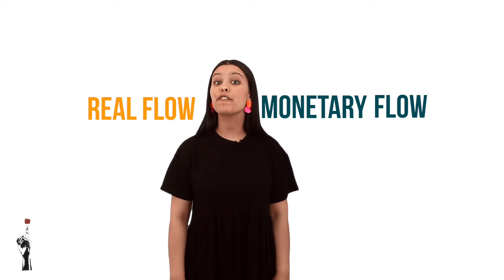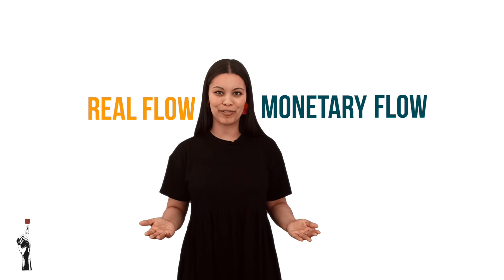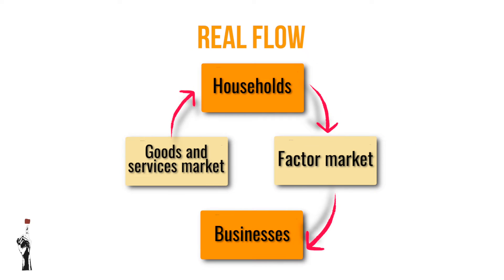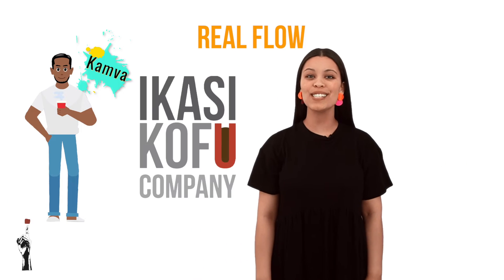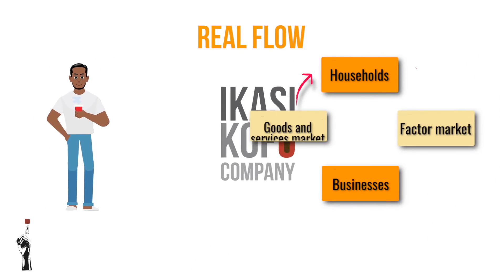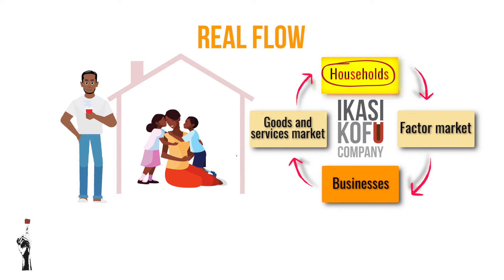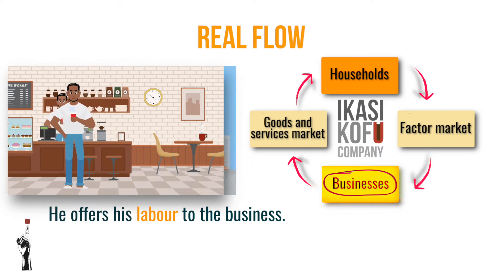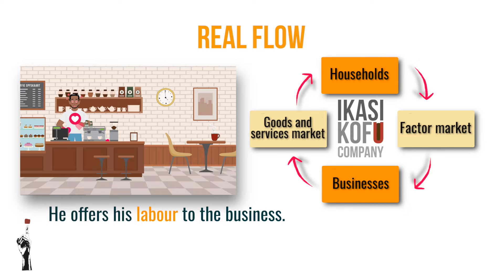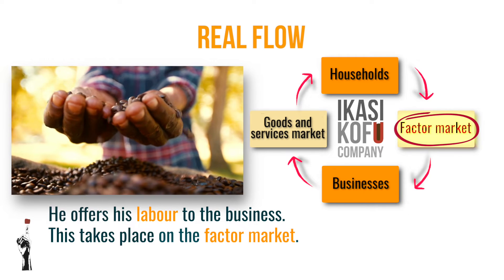There are two circular flows we will look at in this lesson. The first is called the real flow. The real flow shows the movement of goods and services from households to businesses and the usage of factors of production. Let's use Kamva of Ikasi Kofu Company as an example. Kamva is part of a household of four people. He offers his labor, which is a factor of production, to the business as he produces and sells coffee to many customers. This takes place on the factor market.